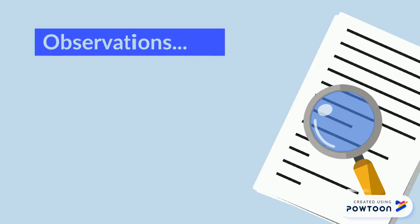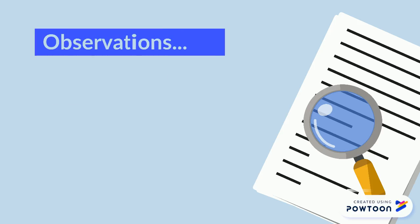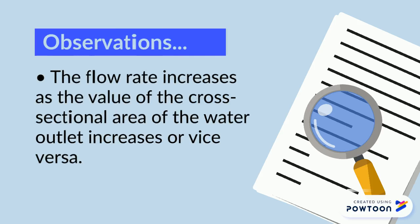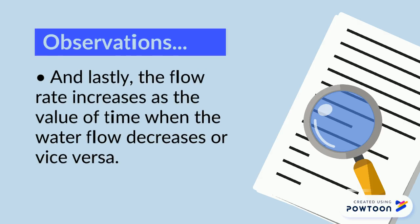The speed of the water coming out from the outlet is unaffected by time. The flow rate increases as the value of the cross-sectional area of the water outlet increases, or vice versa. And lastly, the flow rate increases as the value of time when the water flows decreases, or vice versa.